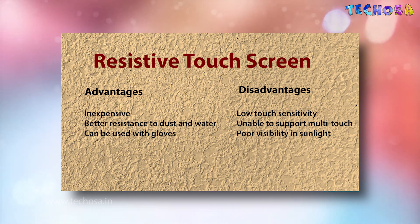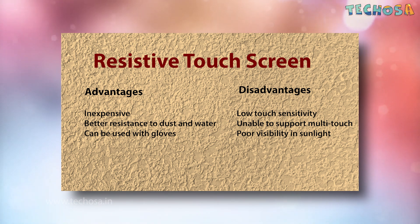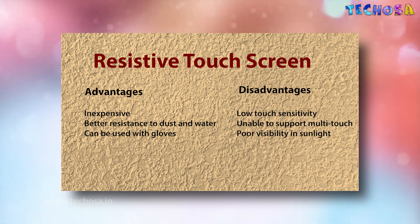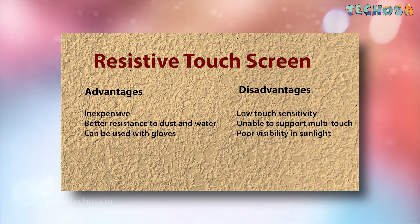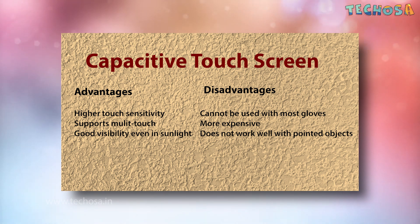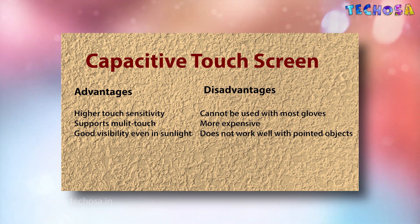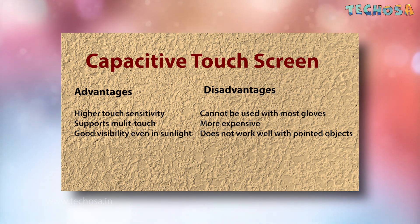Now let's look at the differences between resistive and capacitive touchscreens. Resistive touchscreens are inexpensive, have better resistance to dust and water, and can be used with gloves. Their disadvantages are low touch sensitivity, inability to support multi-touch, and poor visibility in sunlight. Capacitive touchscreens have higher touch sensitivity, support multi-touch, and offer good visibility even in sunlight. Their disadvantages are they cannot be used with most gloves, are more expensive, and do not work well with pointed objects.